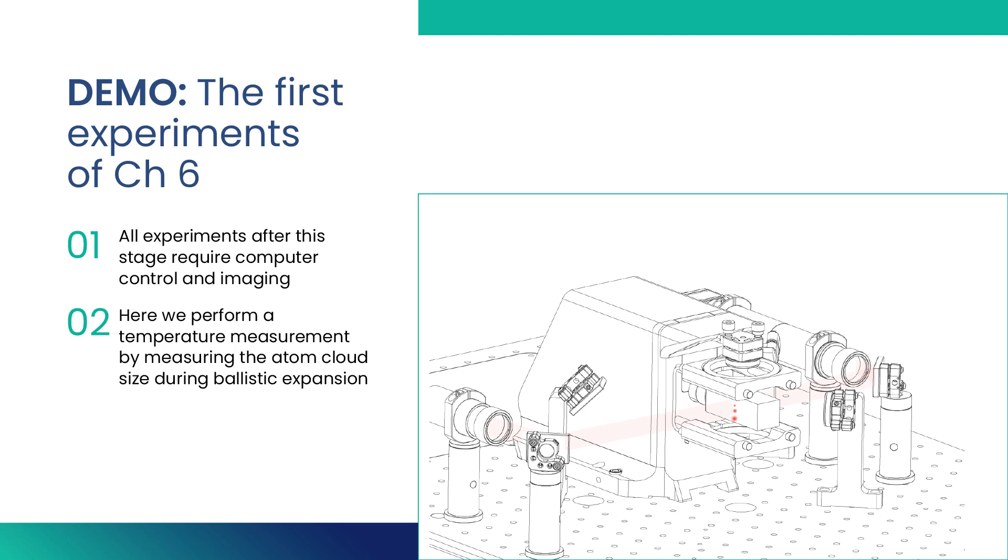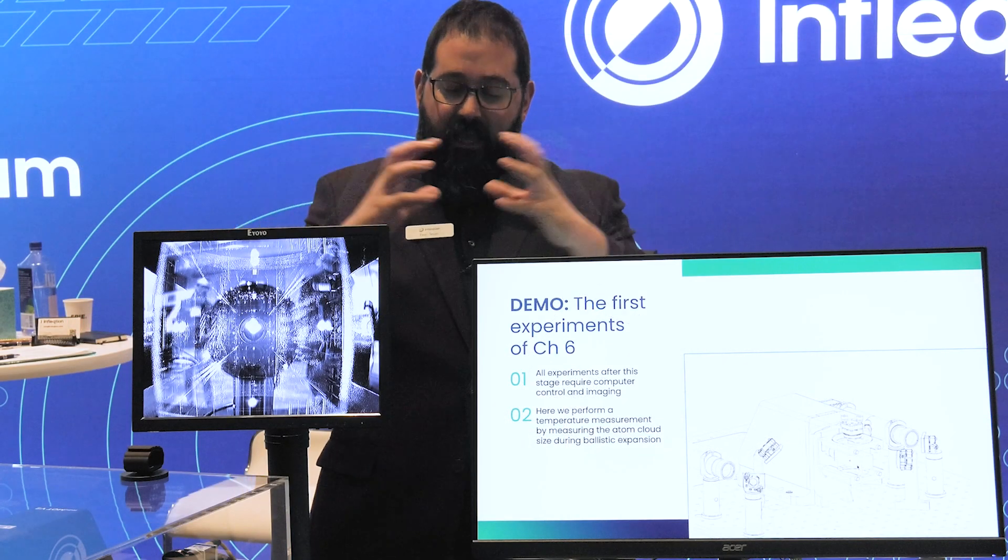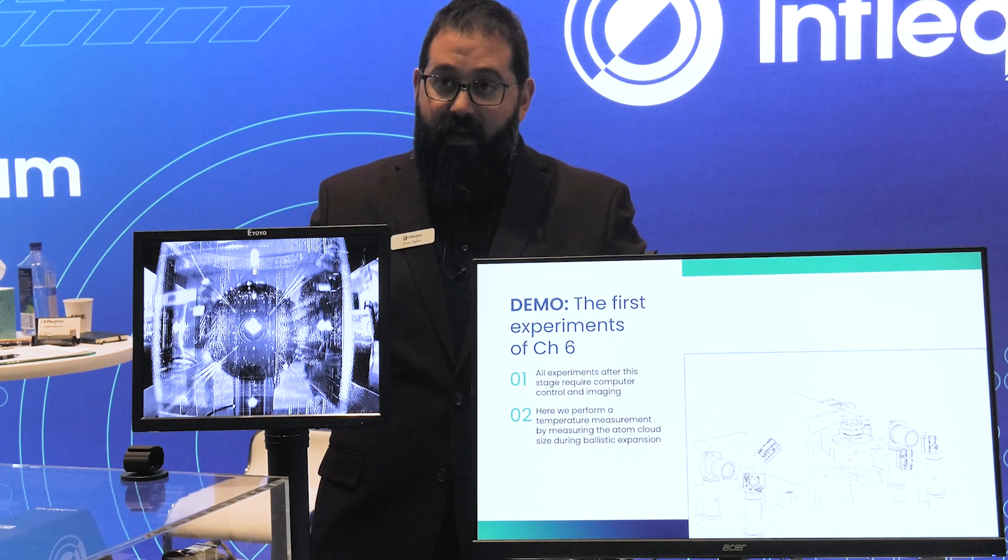This little display shows what's going to happen: we're going to produce the MOT in the video. We're going to drop the atoms and as they drop, they ballistically expand. And the longer they expand, the bigger they get.